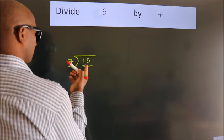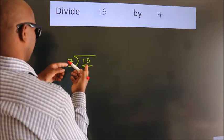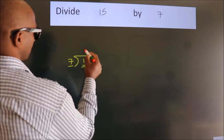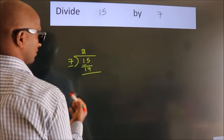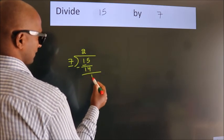15. A number close to 15 in the seven table is seven twos, 14. Now we should subtract. We get one.